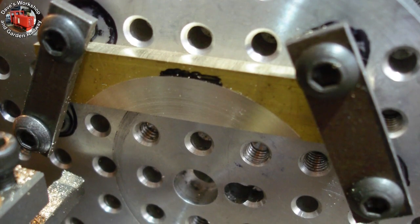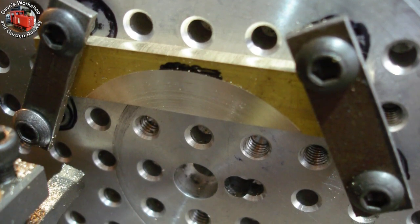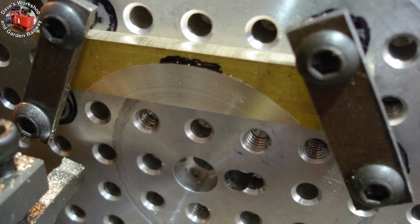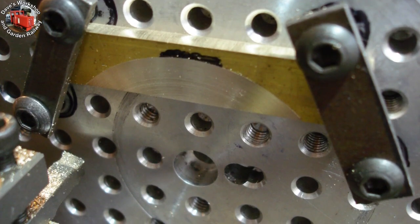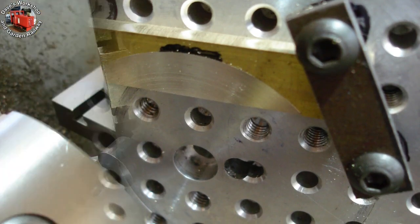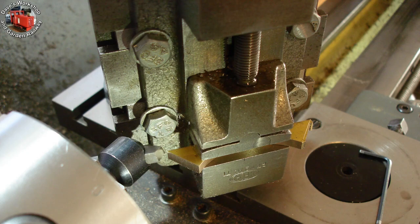Producing the boiler barrel radius by taking facing cuts, rather than boring cuts. This is from a piece of 5mm brass strip. Chamfering the edges with the fly cutter.